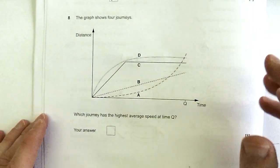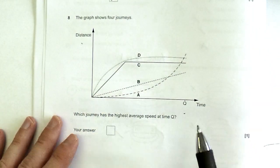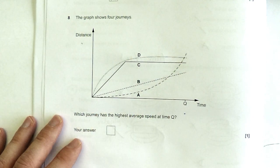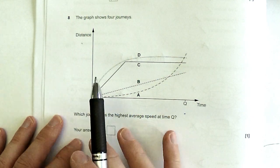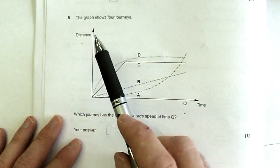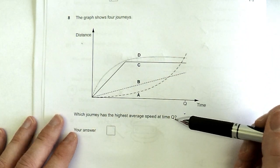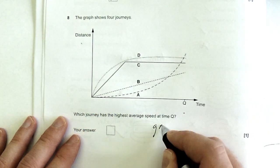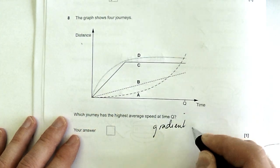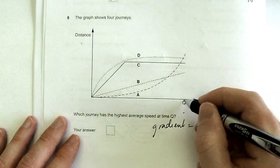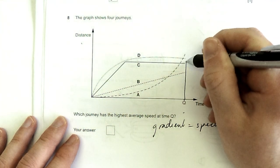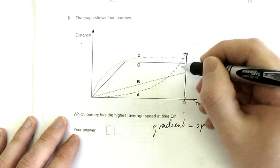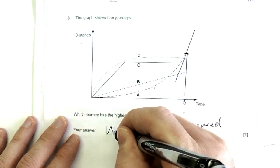The graph shows four journeys. It's a distance-time graph. Essential skill for dealing with motion graphs. First thing you do is look at the axes and figure out what type of graph you're actually looking at. Distance versus time. Which one has the highest average speed at Q? For a distance-time graph, the gradient is equivalent to the speed. So the highest speed at Q is going to be line A.